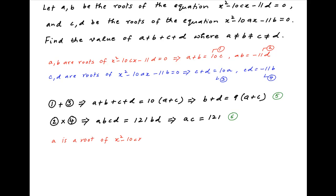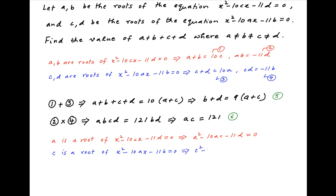Since a is a root of x squared minus 10cx minus 11d equals 0, therefore a squared minus 10ac minus 11d equals 0. Similarly, since c is a root of x squared minus 10ax minus 11b equals 0, it follows that c squared minus 10ac minus 11b equals 0.